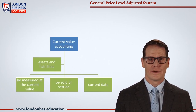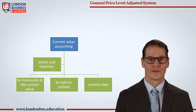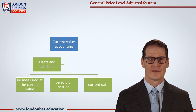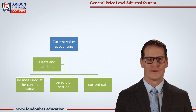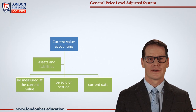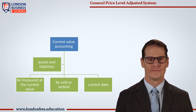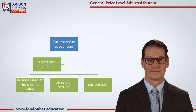Current value accounting is the concept that assets and liabilities be measured at the current value at which they could be sold or settled as of the current date. This varies from the historically used method of only recording assets and liabilities at the amounts at which they were originally acquired or incurred, which represents a more conservative viewpoint.